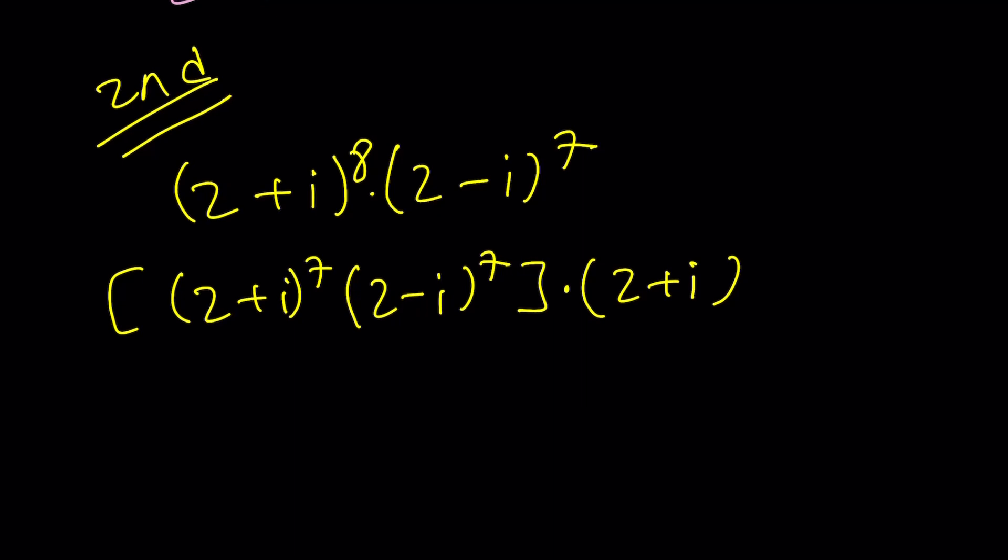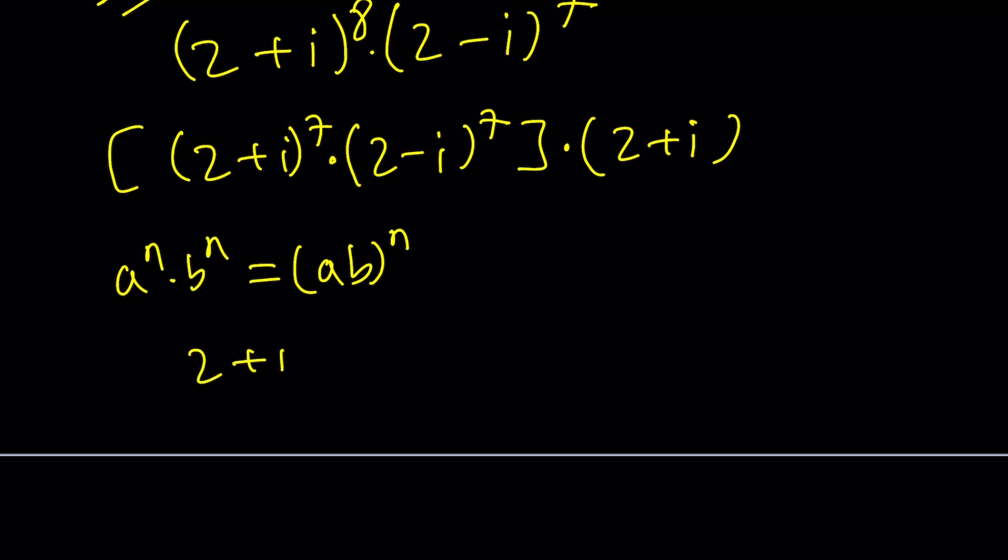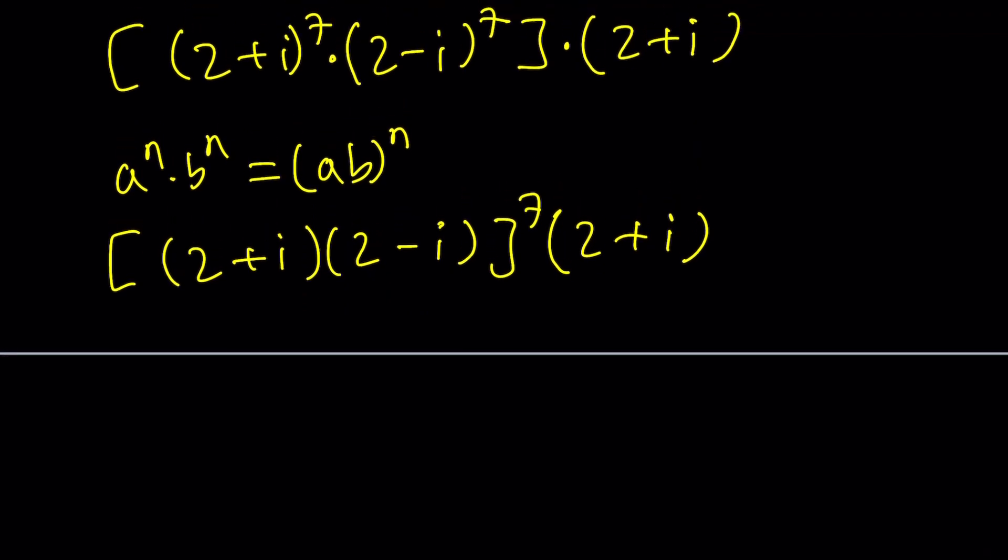Now look at the brackets. Inside the brackets I have the same powers therefore I can just combine them. Using the power rule a^n b^n which also works with complex numbers (ab)^n. So I can go ahead and combine the bases or multiply them. In other words multiply (2+i) and (2-i) and then raise the product to the 7th power and don't forget to multiply by 2+i. They're left over. Now when you multiply a complex number by its conjugate, remember when you multiply two complex conjugates you do get a real number and it's always the sum of two squares. It's 4+1 which is 5.